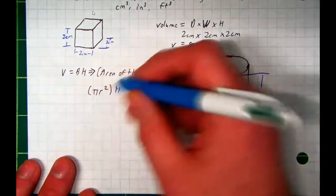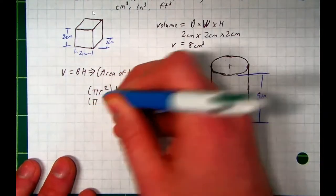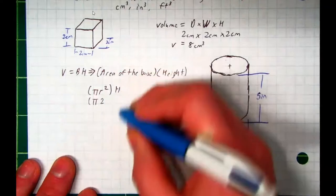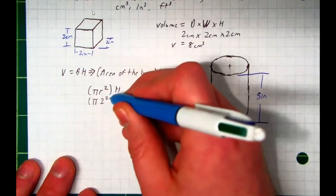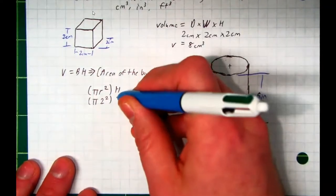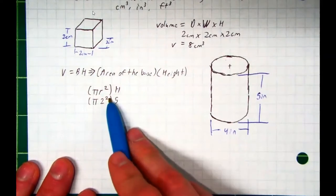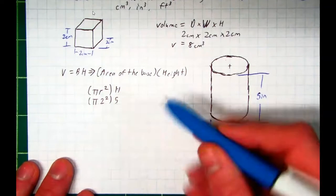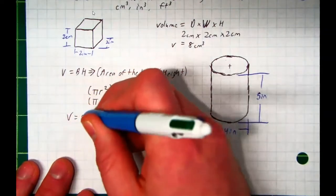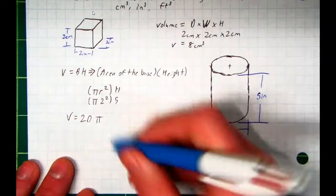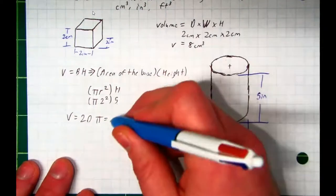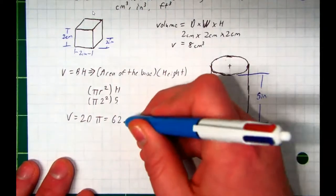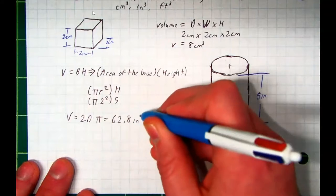So we just plug in our numbers. We say, okay, pi is still pi. r is 2 inches this time, and we square it and multiply it by our height, which is 5. Okay, 2 squared is 4, times 5 is 20. So we say, okay, volume equals 20 pi. And to simplify it, I'm just going to go ahead and do it for you. It's 62.8 inches cubed.